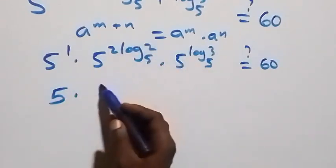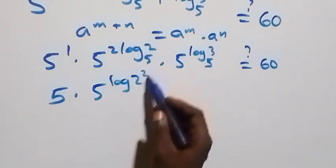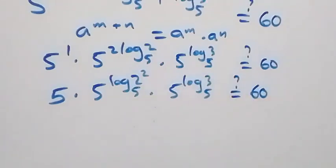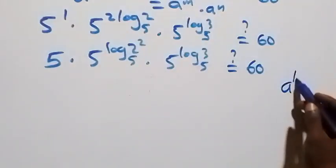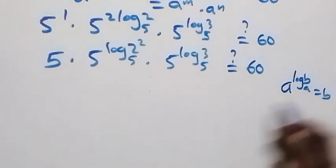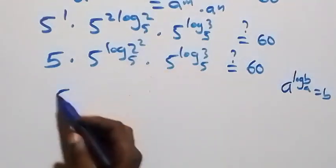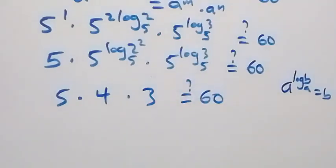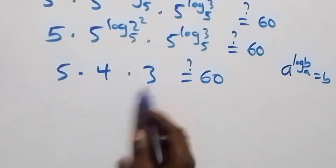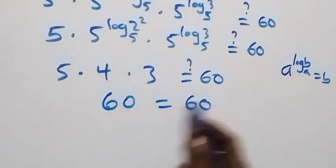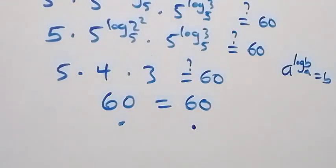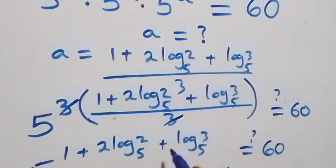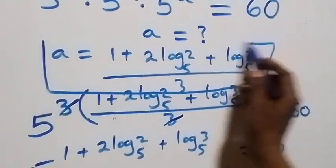From the law of logarithms, a raised to power log b base a equals b. So 5 raised to power 2 log 2 base 5 equals 2 squared, which is 4, and 5 raised to power log 3 base 5 equals 3. So we have 5 times 4 equals 20, then times 3 equals 60, which equals 60. The left side equals the right side, so we conclude that a equals 1 plus 2 log 2 base 5 plus log 3 base 5, all over 3, satisfies the given problem.